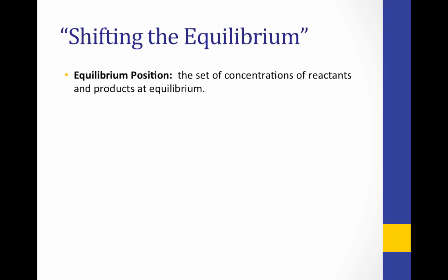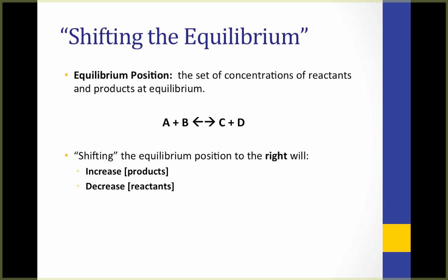So what does it mean to shift the equilibrium? The equilibrium position is the set of concentrations of reactants and products at equilibrium. If we stress this system, it will fall out of equilibrium, and when equilibrium is re-established, the concentrations of A, B, C, and D will be different. If we shift the equilibrium position to the right, this means we're increasing the concentration of the products and decreasing the concentration of the reactants — we've made more product and used up more reactant.